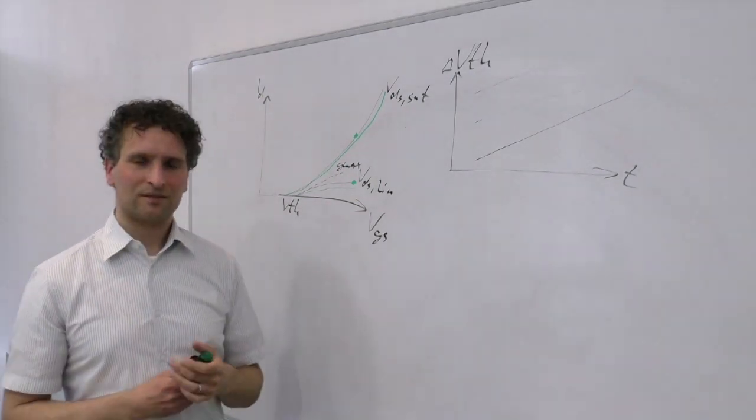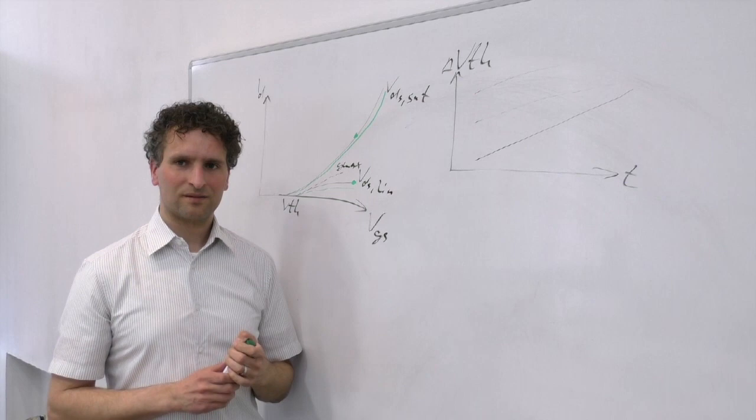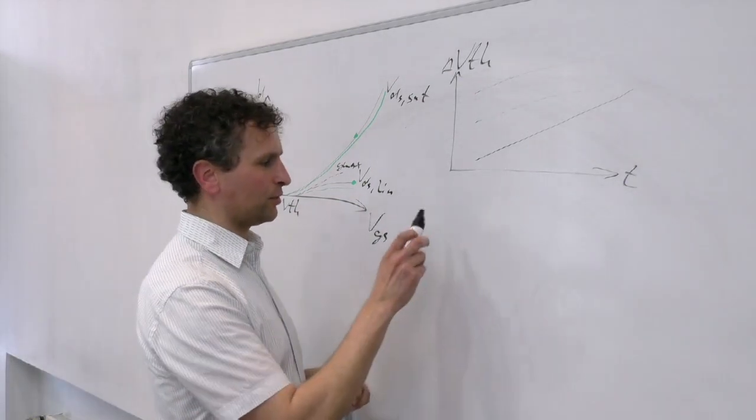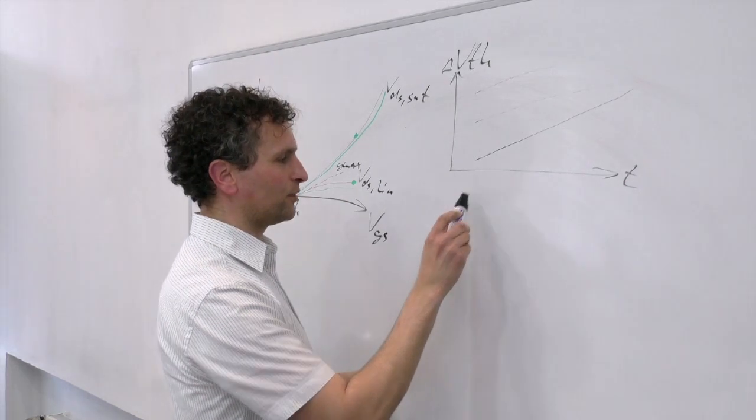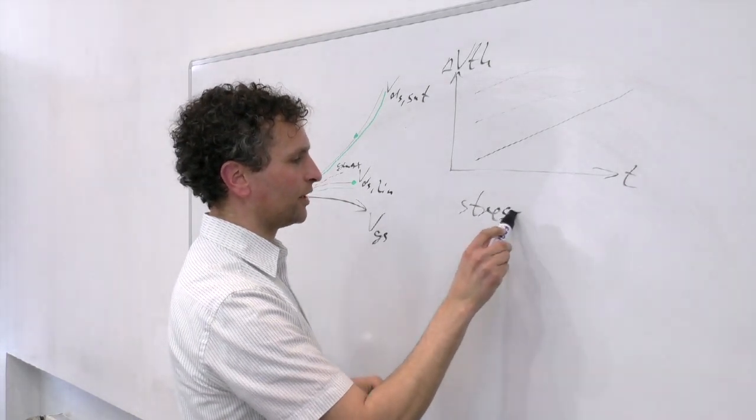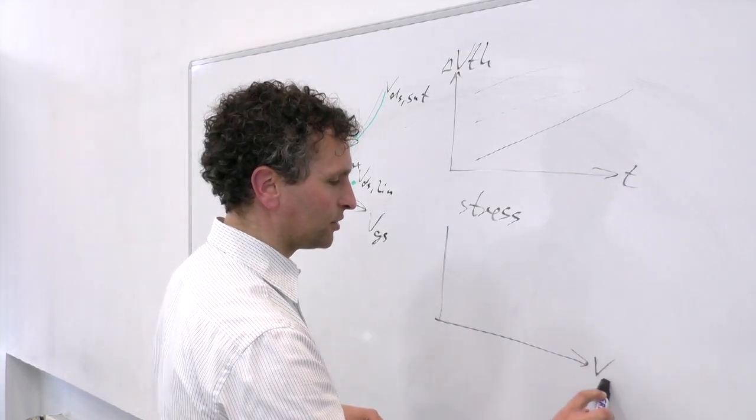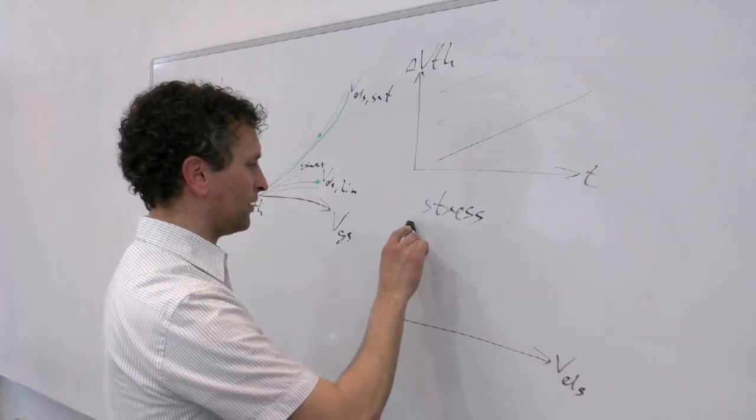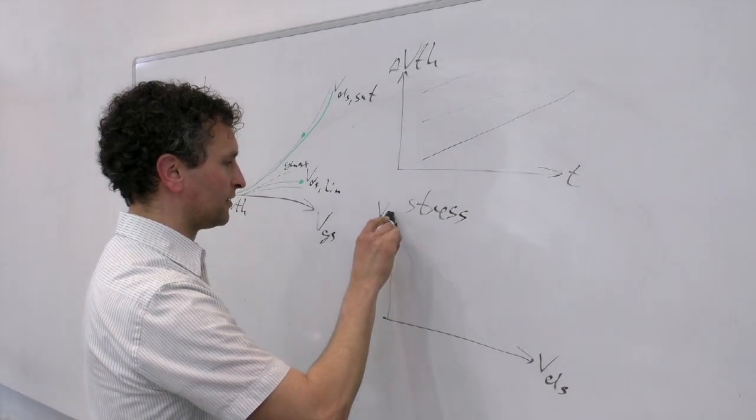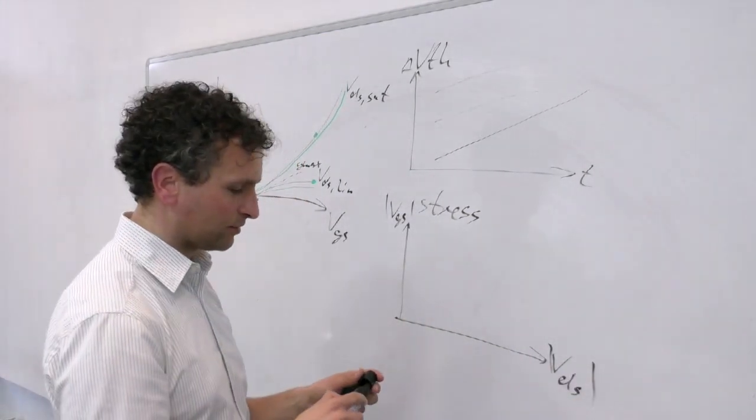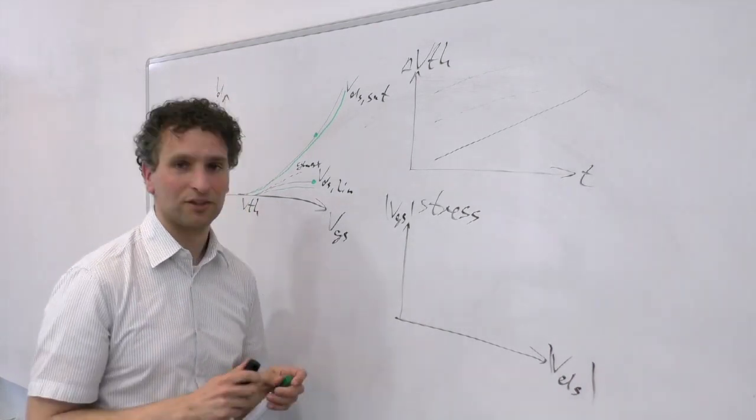So what happens when you measure VDS and VGS combinations? So what is usually done in practice, we'd say you come to stress, to the stress phase of the measurements for degradation. You can show the line that we have here the drain source voltage VDS and the gate source voltage VGS. So please consider it to be absolute numbers, because polarity doesn't really matter yet.